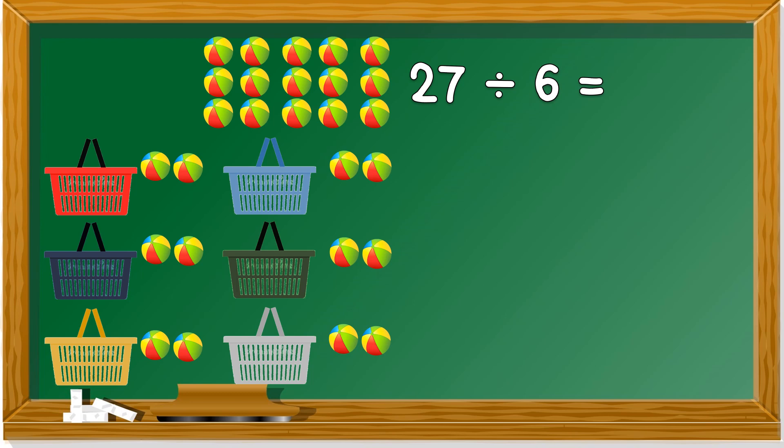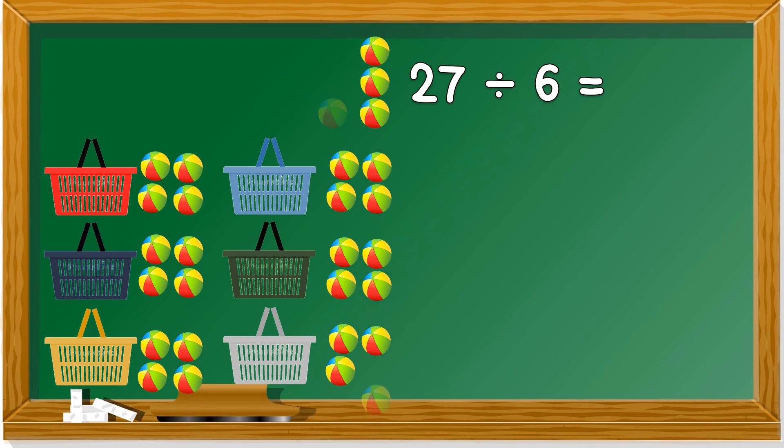Now, each basket has two balls. The remaining, can we still divide by 6? Yes. Now, each basket has three balls. And we are left with 9. Can 9 be given into 6 baskets? Yes, 9 is bigger. Now, each basket has four balls. And remaining, we have three balls. Can 3 be given to 6 baskets? No. Not enough, right? So, 27 divided by 6 is 4 with remainder of 3.